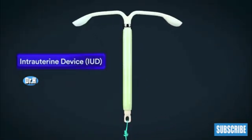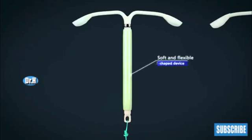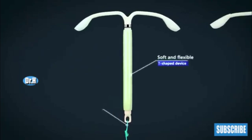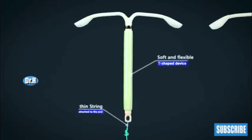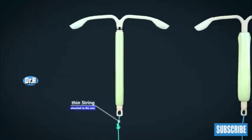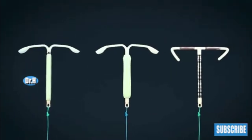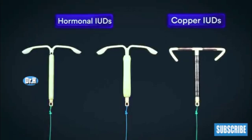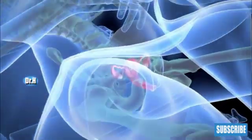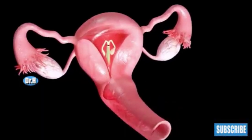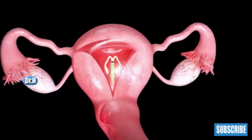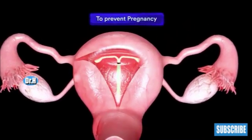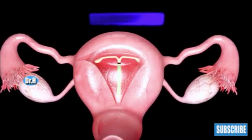The intrauterine device, or IUD, is a type of birth control that consists of a soft and flexible T-shaped device with a thin string attached to the end. IUDs are classified into two types: hormonal IUDs and copper IUDs. A doctor puts an IUD within a woman's uterus, with the string hanging down inside the vagina, to prevent pregnancy.